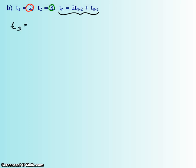So let's start off with the third. Since we're using that recursion formula, my n is 3, which means I have 2 times 3 minus 2 plus t₃₋₁.